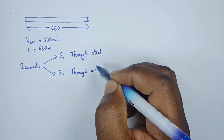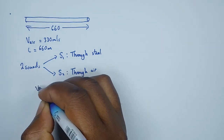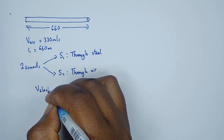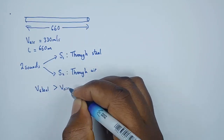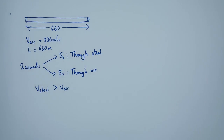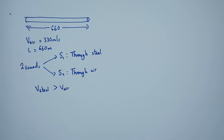Someone produces a sound on one side and two sound intervals are heard — one traveling through the steel, the other through the air. Which one is greater? The velocity in steel is greater compared to the velocity in air, because particles in a solid are more closely packed, meaning sound travels faster through steel than through air.